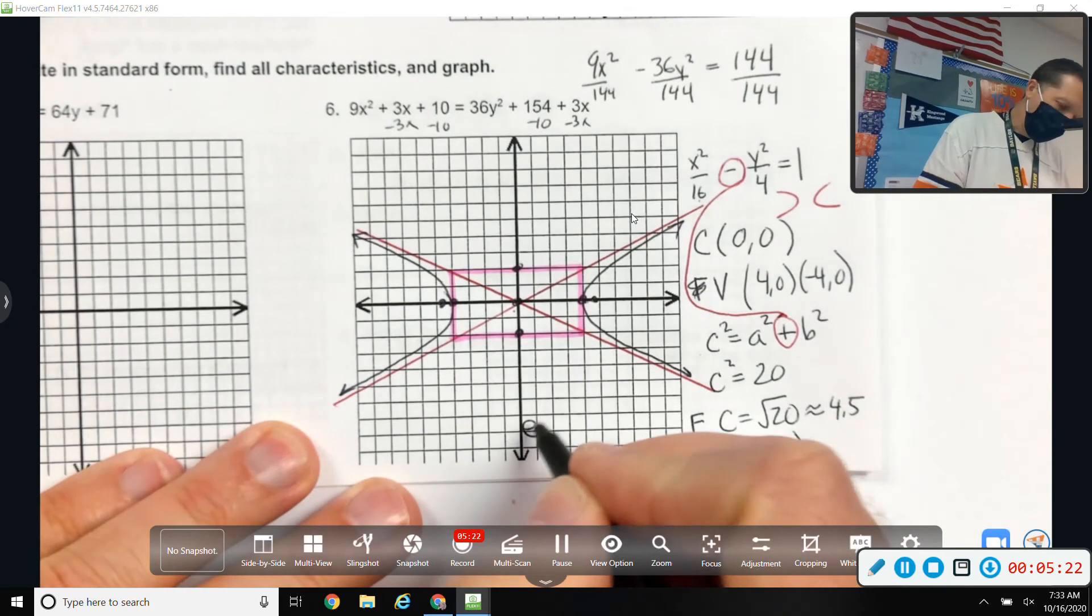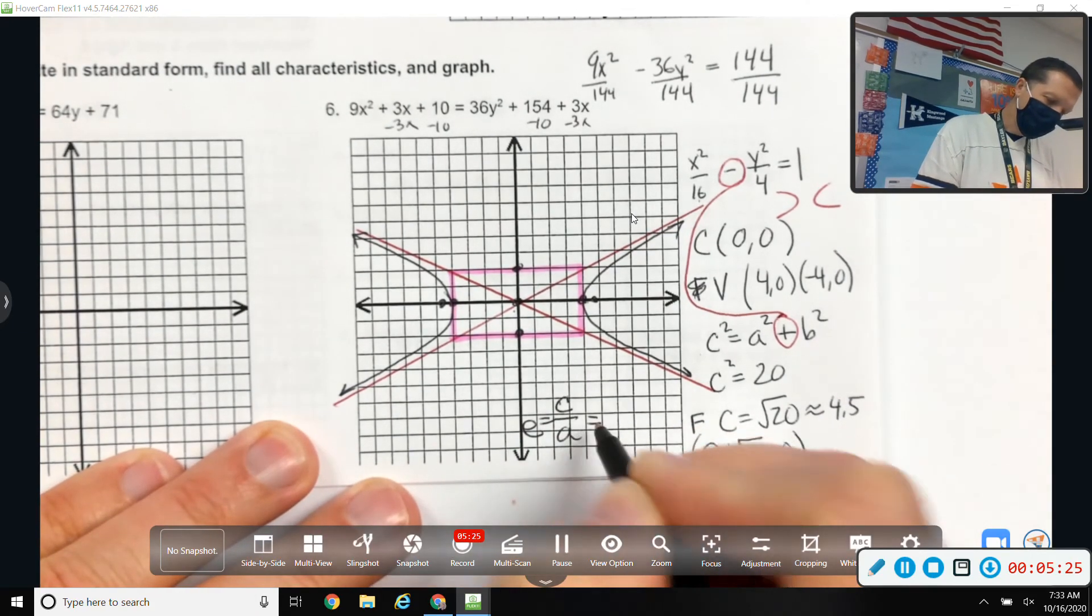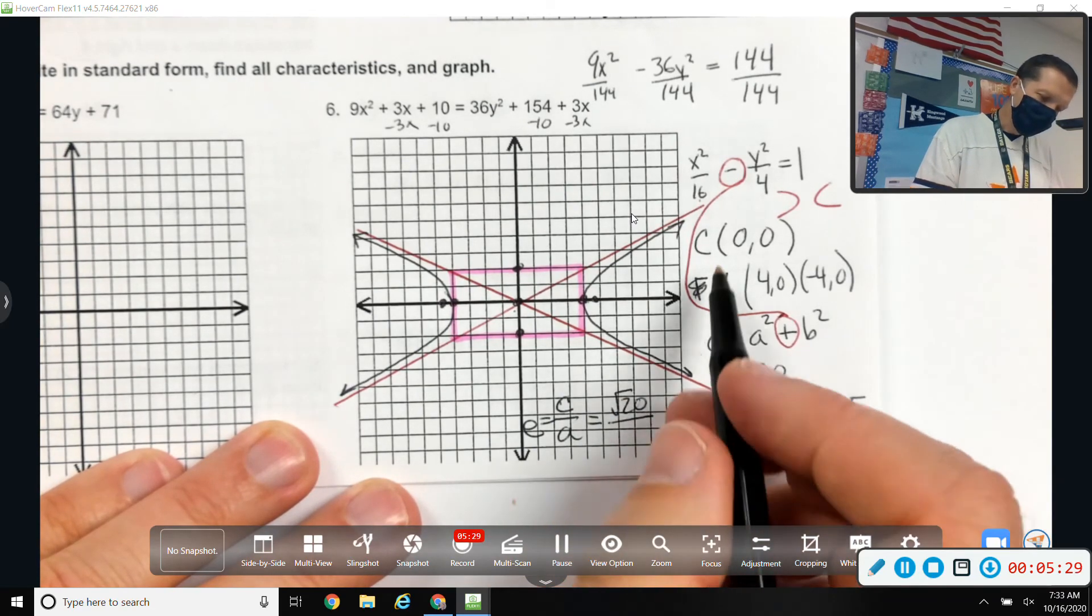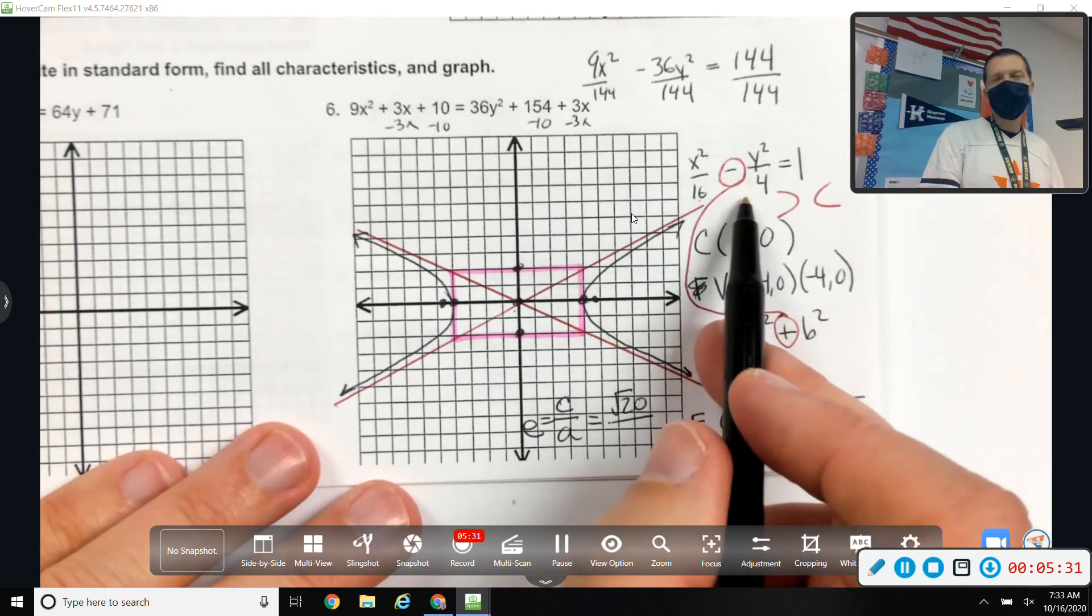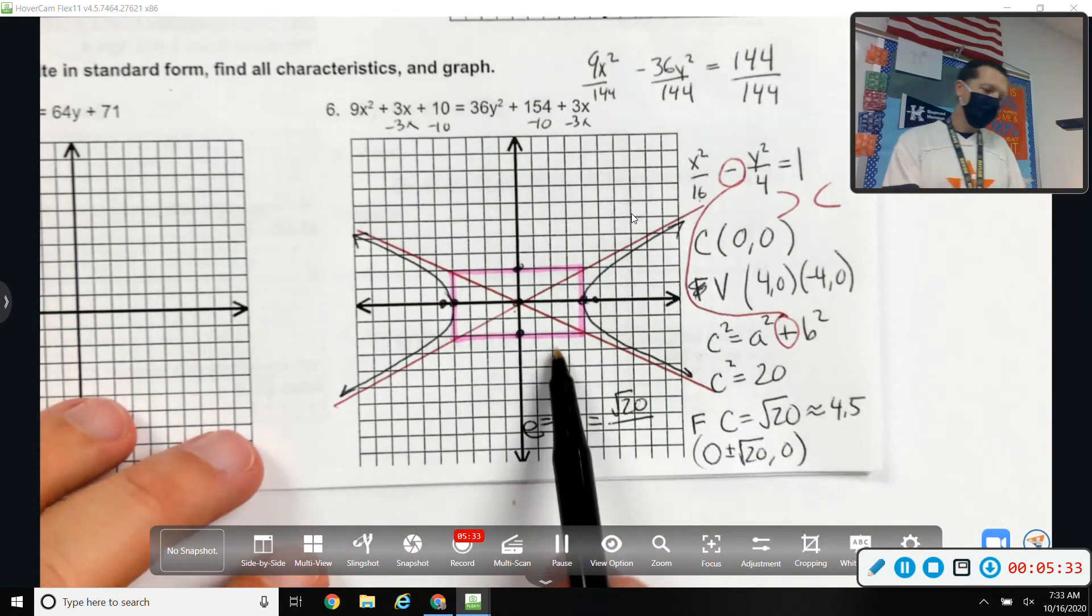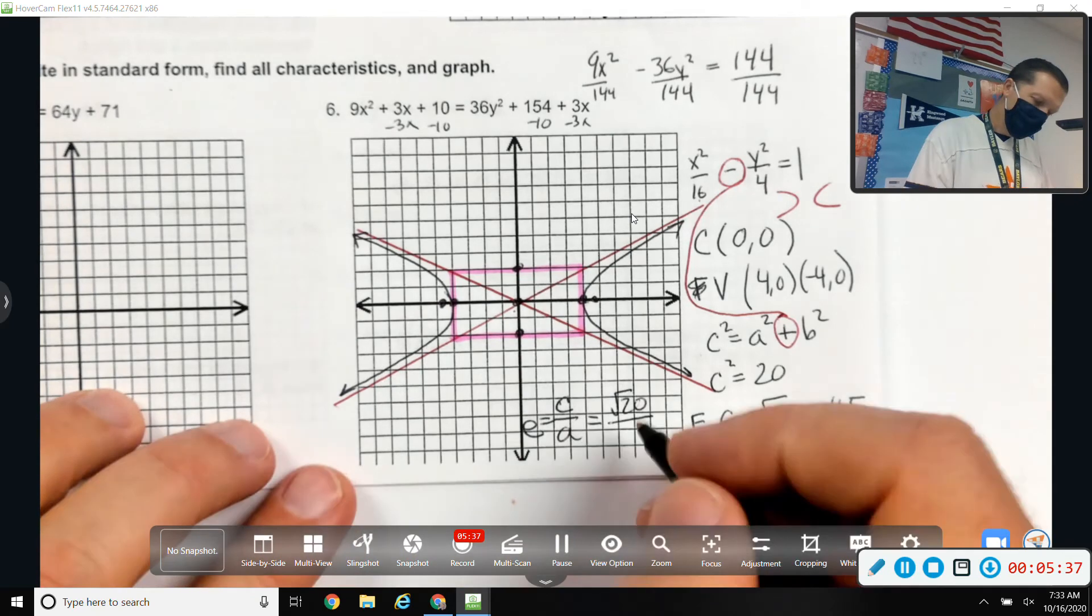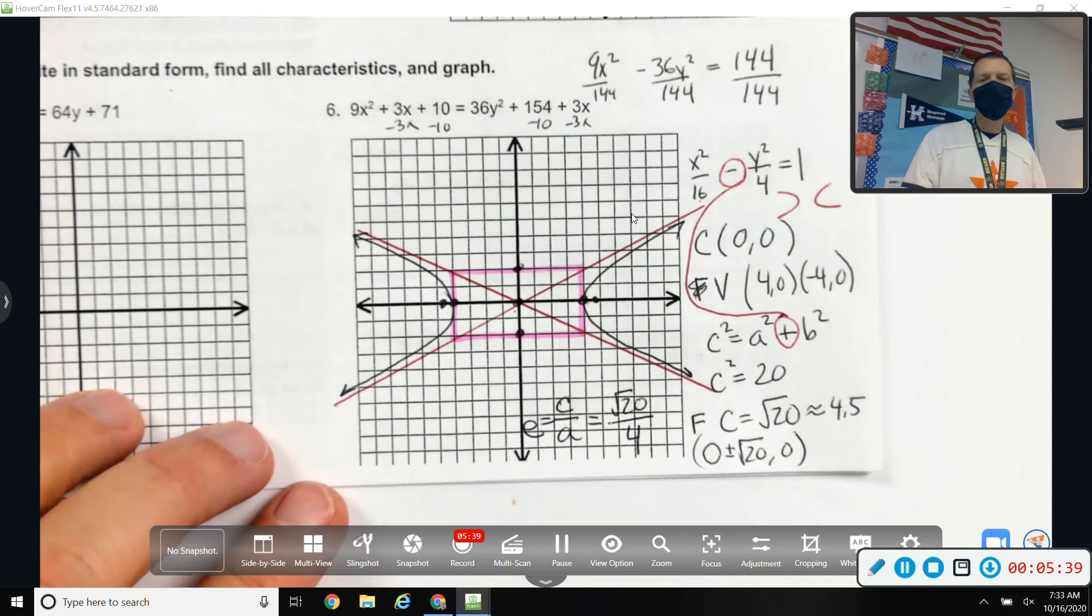And the eccentricity is c over a. So, square root of 20 over. Here's the only time where a matters. That a is always first. A is the main one. So, a would be 4. So, root 20 over 4.